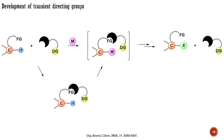Here is another extension of the directing group strategy. A modern variation of removable directing groups is known as transient directing groups. This strategy is based on reversible reactions. For instance, if your substrate contains a functional group that may not serve as an effective directing group but can be reversibly transformed into other functional groups, you can apply a directing group that can be attached and detached during the reaction.